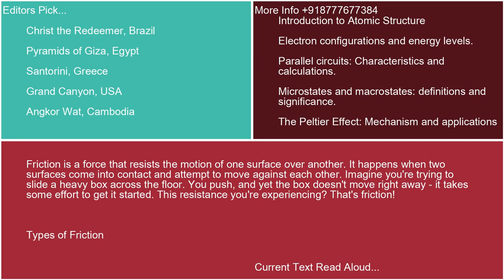What is friction? Friction is a force that resists the motion of one surface over another. It happens when two surfaces come into contact and attempt to move against each other. Imagine you're trying to slide a heavy box across the floor. You push, and yet the box doesn't move right away. It takes some effort to get it started. This resistance you're experiencing? That's friction.